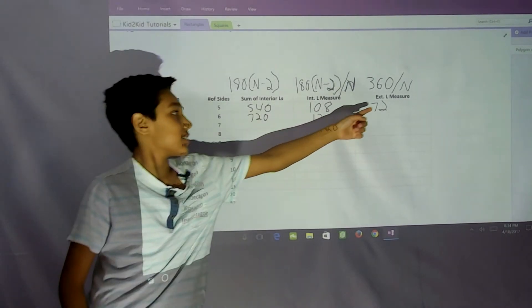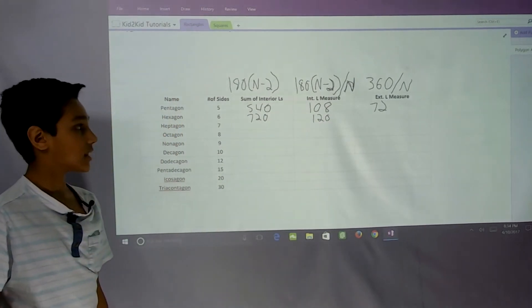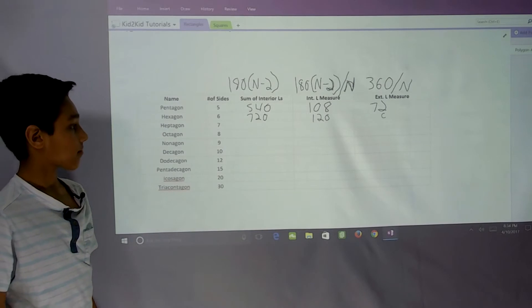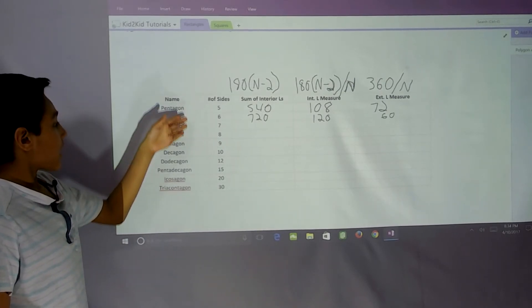We plug in 6 for n, and 360 divided by n equals 60. So we have this for our angle measures.